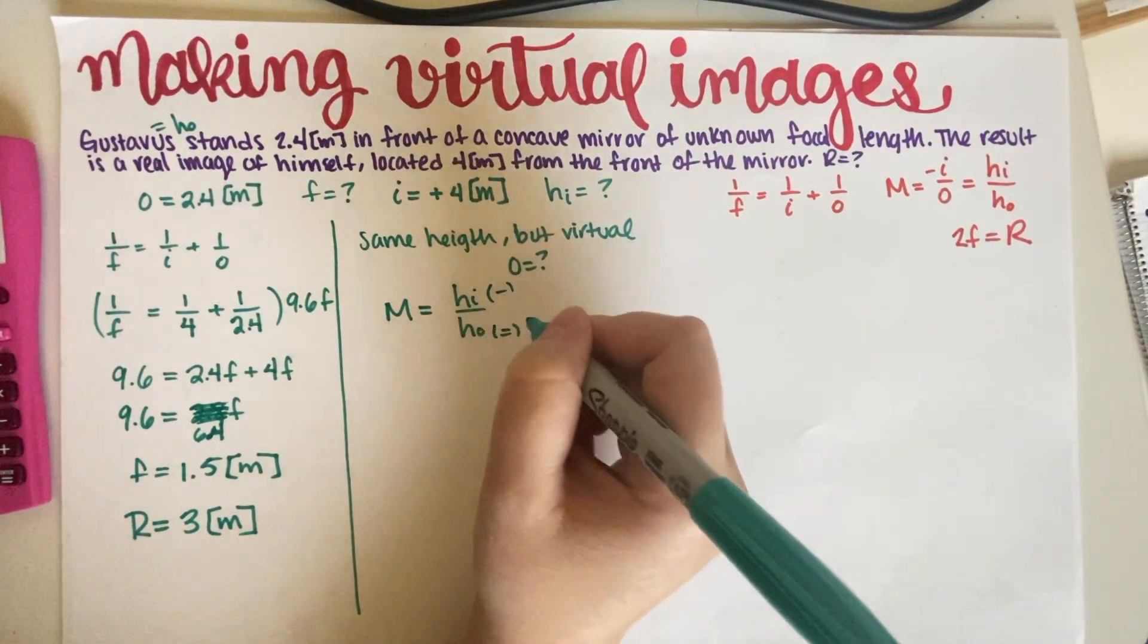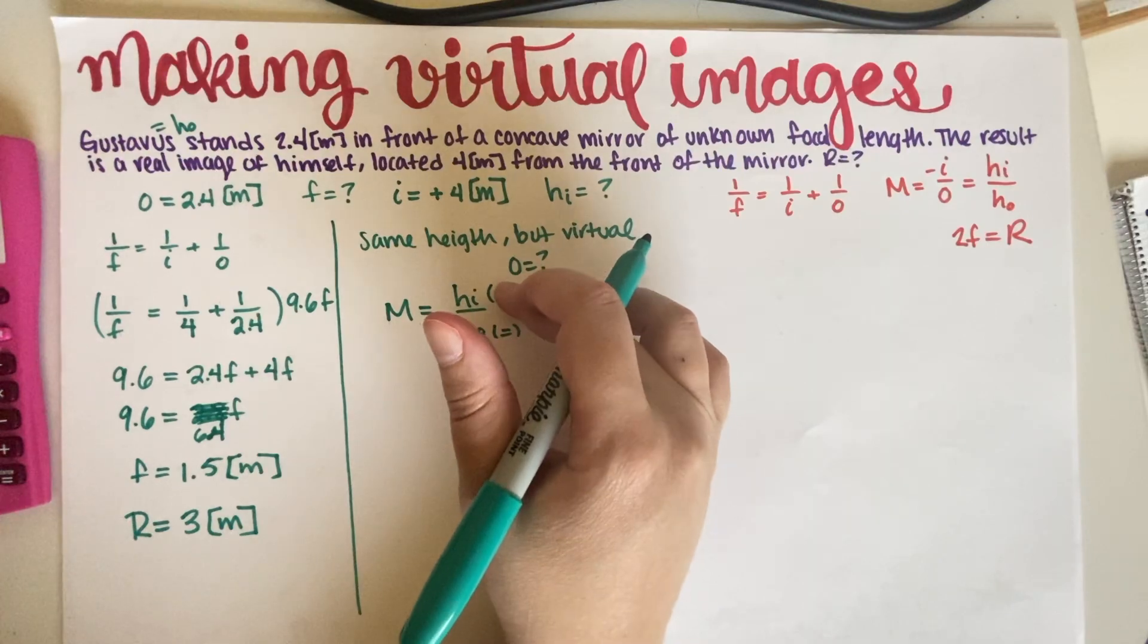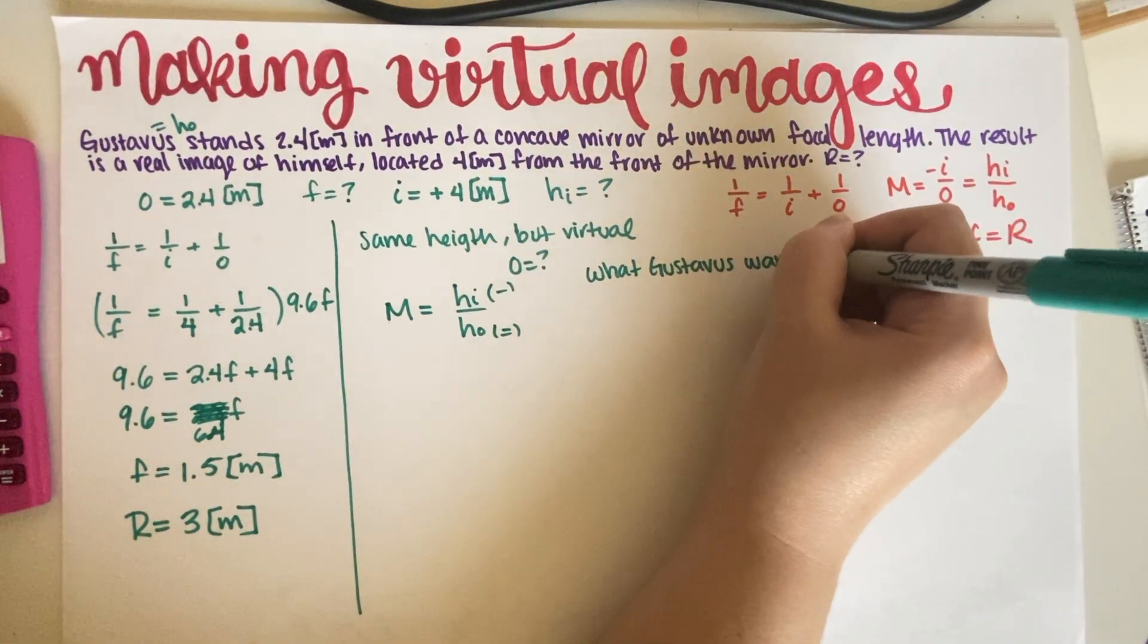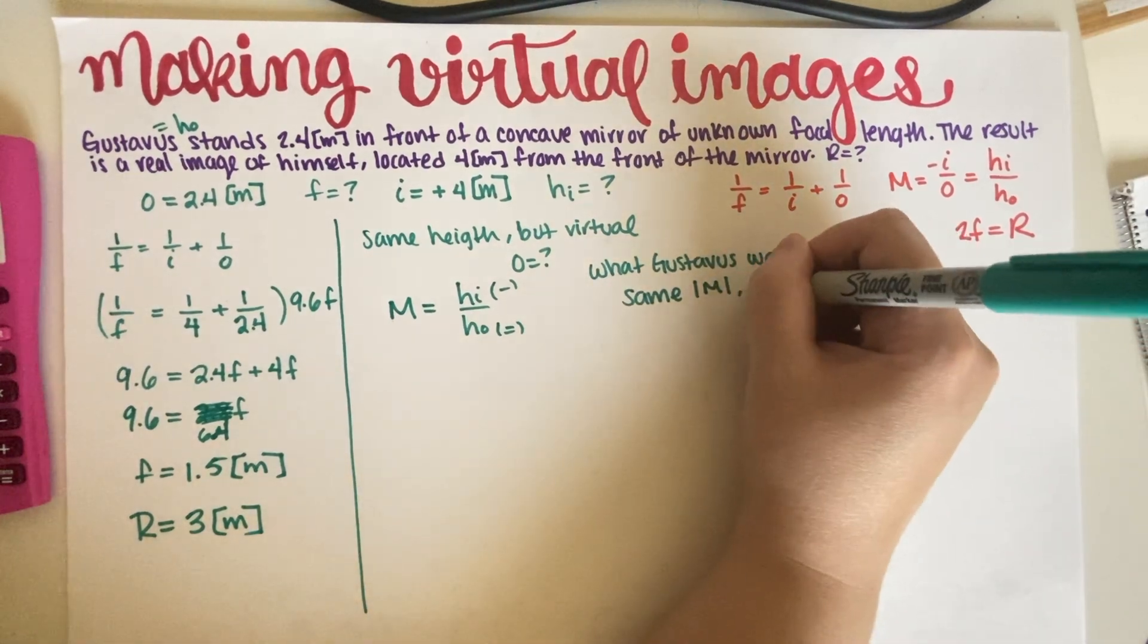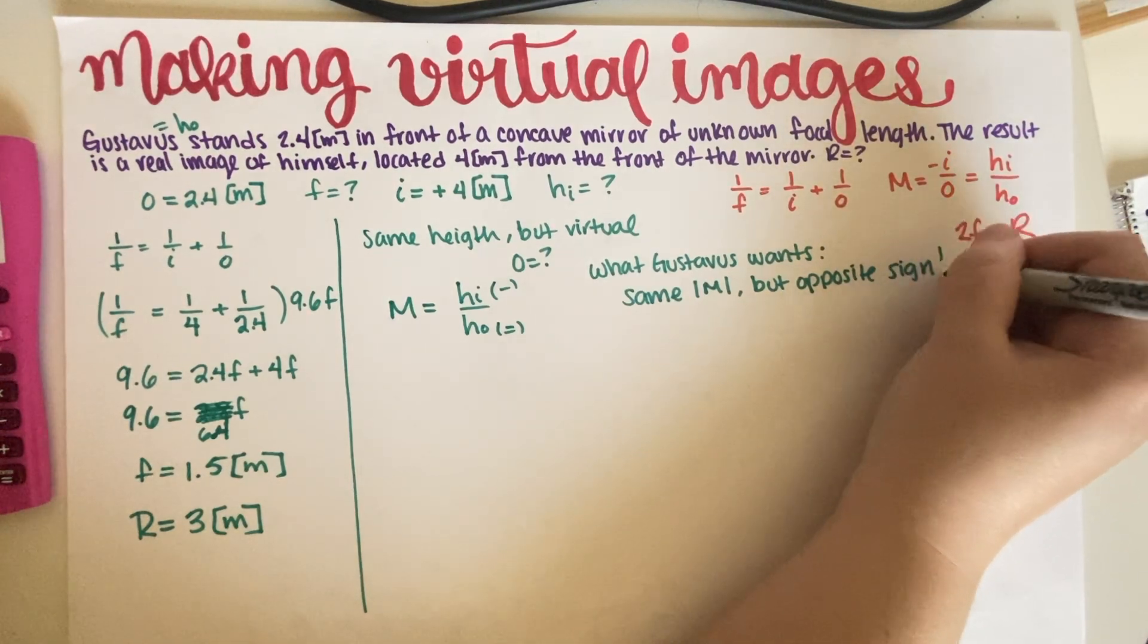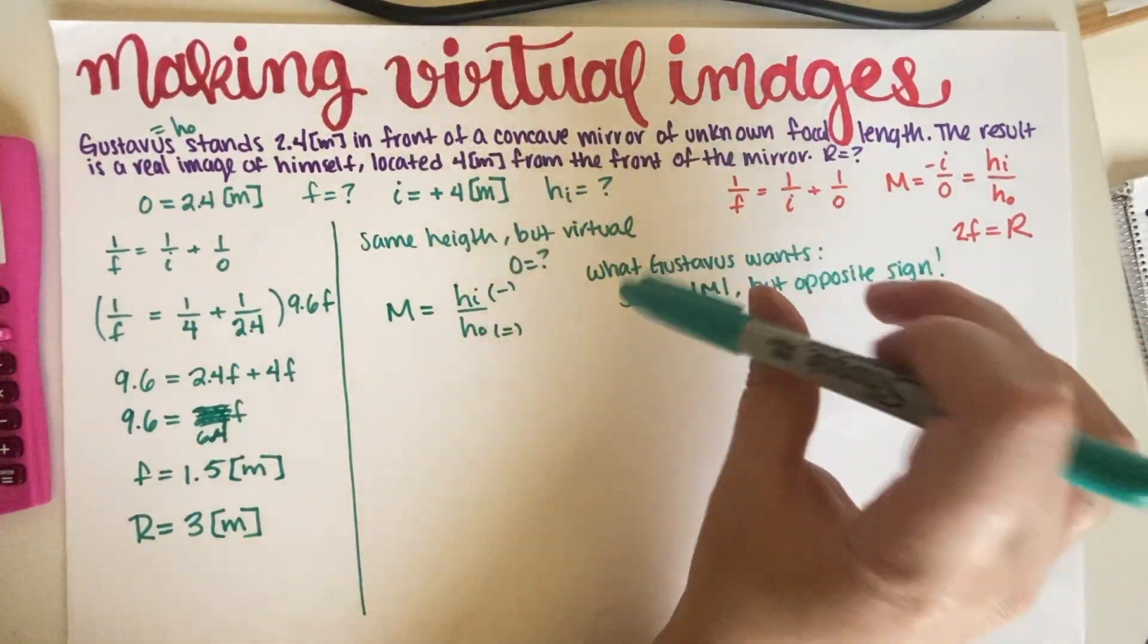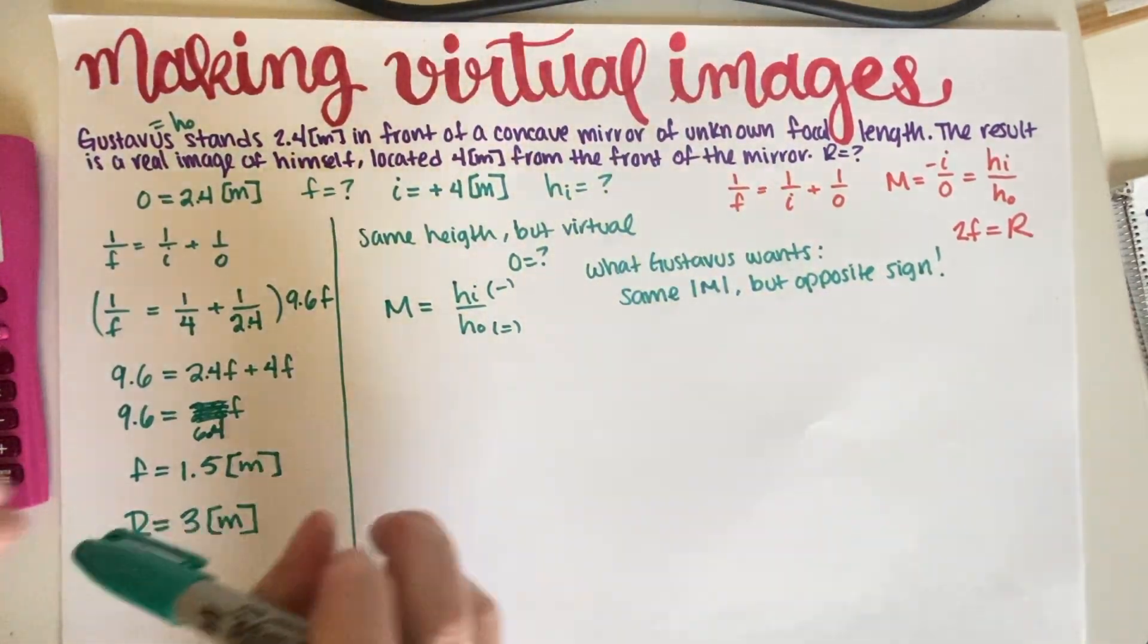And he wants the same height, except he wants it on the virtual side. So he wants it negative, this part. So essentially, what Gustavus wants is same magnification, but opposite sign. So whatever magnification we had over here on part A, he wants the exact same number, because he wants the same size of the image, except he wants it on the other side of the mirror. So he wants a different sign. So we need to find the magnification and then just work with that.